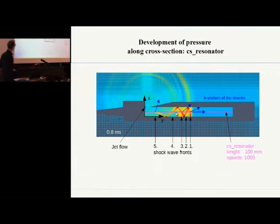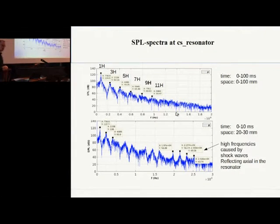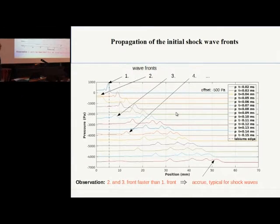And to analyze these fronts I sampled a cross section through the resonator called CS resonator. And here is the SPL spectrum of this sample data set. You can see the upper picture is the whole numerical time setup. You can see a very nice fundamental frequency and the higher harmonics. And here at the end, this picture below is the range of the transient, and here you can see some high frequencies. These are reflecting waves with high frequency which we identify with shock waves. And the question is, are these shock waves or not?